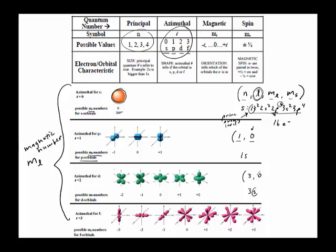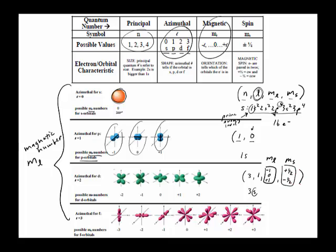If it were a p — let's say the first number was three and then a one — the next number, which is the magnetic number, could be a negative one, a zero, or a positive one. That just tells you the orientation of the orbital — that's the magnetic number. Lastly is the spin number, so the next number would be either a positive one half or a negative one half, and this tells you if the electron is spinning clockwise or counterclockwise.